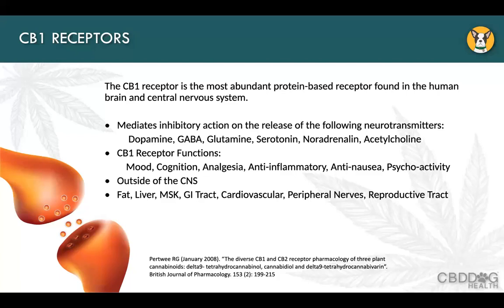Since the CB1 receptor is important in inhibiting some neurotransmitters, it's also important in controlling mood, cognition, pain, reducing inflammation, reducing nausea, and the psychoactivity of THC. Outside of the central nervous system, it's found in other tissues as well — the fat, liver, musculoskeletal system, cardiovascular system, peripheral nerves, and reproductive tract. Because it's found in the cardiovascular system, it's important for pets with existing heart disease to be very cautious with dosing.